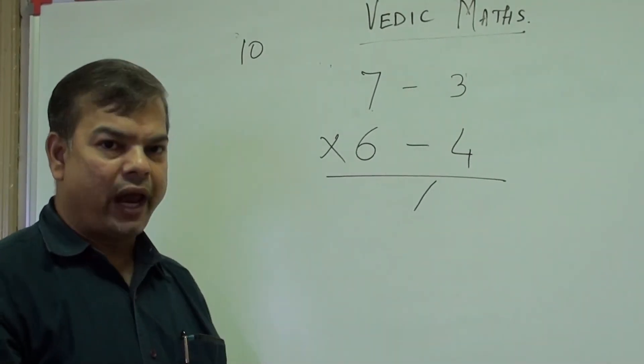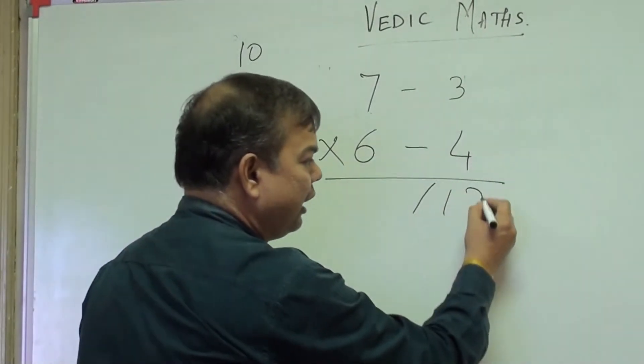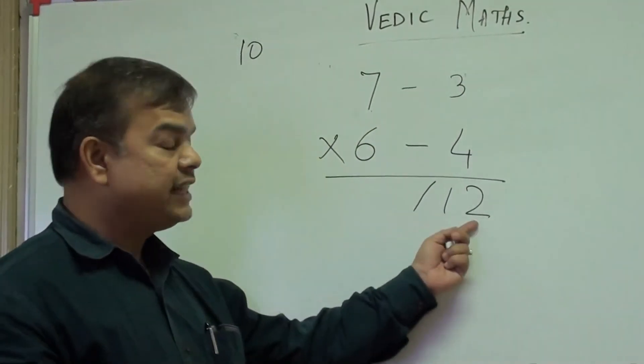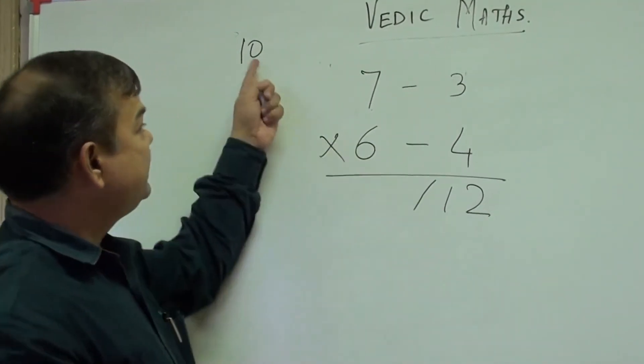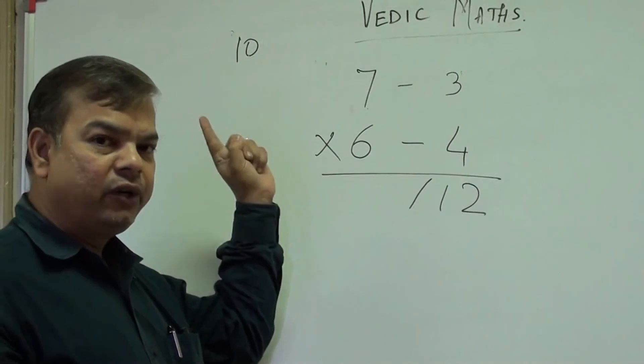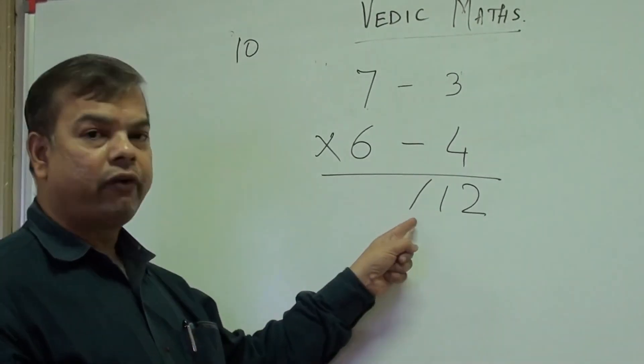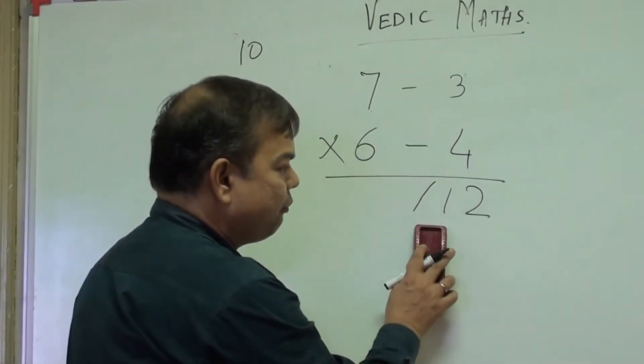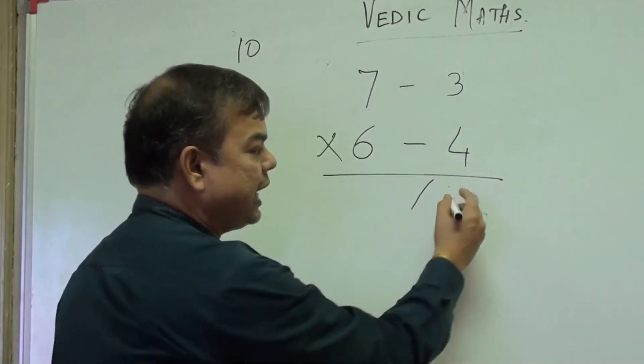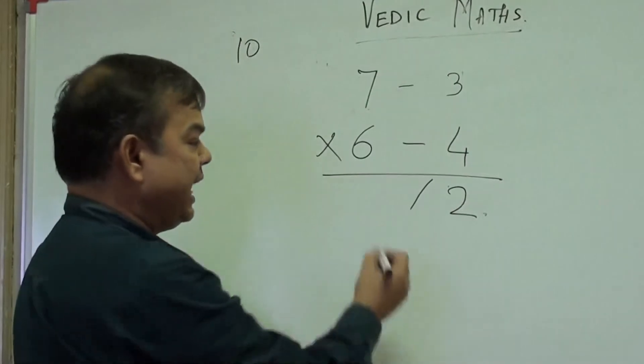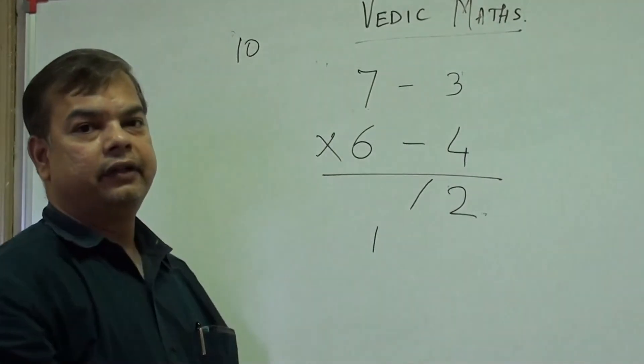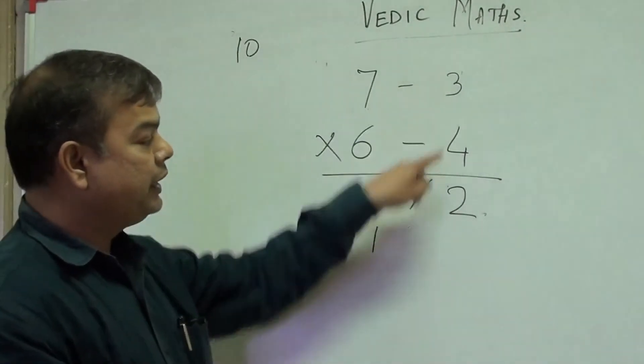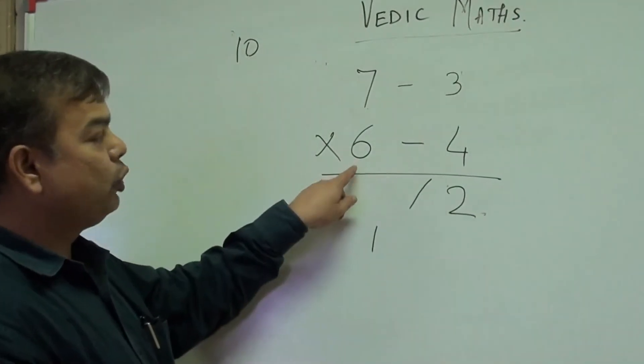So your answer is plus 12. Now you cannot write both the digits here because the base is 10, it has got 1 zero, and therefore after this forward stroke you can write only one digit. Therefore out of this 12 you can just write 2, and 1 will be carried forward. So our multiplication job is over. We will do cross addition, so 6 minus 3, that is 3, or 7 minus 4, that is again 3.